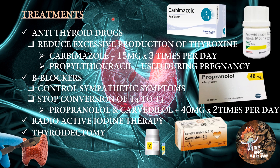Let's talk about the treatments for hyperthyroidism. We can give antithyroid drugs, which will reduce excessive production of thyroxine. Examples are carbimazole 15 mg three times per day, and propylthiouracil, which is used during pregnancy. We can also give beta blockers, which will control sympathetic symptoms and also stop the conversion of T4 to T3.